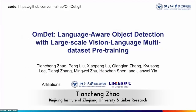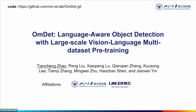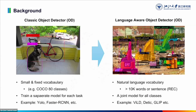Hello there, this is Tianchen Zhao from Zhejiang University and Linke Research. Today I'm presenting our work on language-aware object detection with large-scale vision language pre-training. Object detection (OD) is a classical computer vision task, previously focusing on a fixed dataset with a fixed and small vocabulary such as 80 classes in COCO, with separate models trained for each dataset — YOLO and Fast-RCNN are examples. Recently, benefiting from large-scale vision-language pre-training, research has extended to open-vocabulary or language-aware OD, where vocabulary size goes from 20 or 80 classes to more than 10,000 classes or full natural language sentences such as referral expression comprehension. Example models include VILD from Google, DETIC from Facebook, and GLIP from Microsoft.